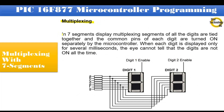In 7 segment display multiplexing, segments of all the digits are tied together and the common pins of each digit are turned on separately by the microcontroller. When each digit is displayed only for several milliseconds, the eye cannot tell that the digits are not on all the time.